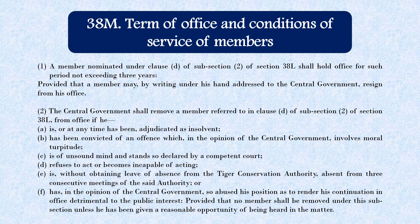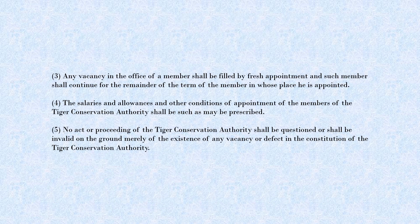A member can also be removed if they have an unsound mind or cannot be declared competent by a court, or if they refuse to act or are incapable of acting according to the law. If they take leave without submitting a leave of absence application to the Tiger Conservation Authority and leave has not been granted, they also risk being removed. Additionally, if they are acting against the public interest and not taking care of the people, they will be removed.